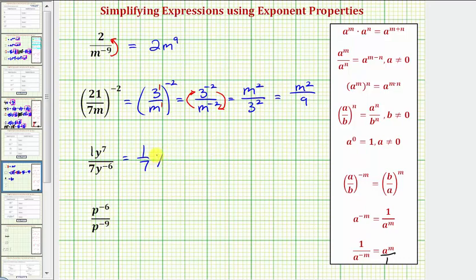So we would have y raised to the power of seven minus negative six. This would be one seventh y to the seven plus six, or thirteenth power. So our expression is simplified and it is correct, but we can also write it as, if we wanted to, y to the thirteenth divided by seven. These two expressions are equivalent.